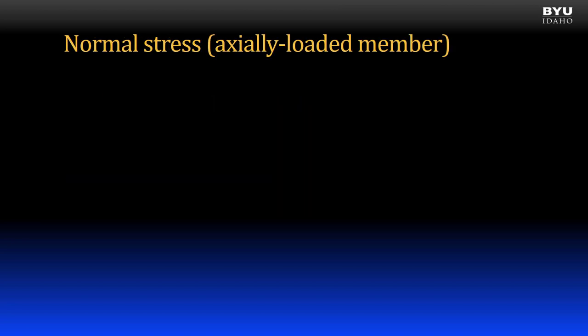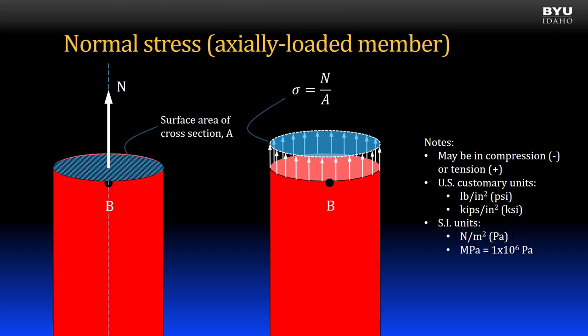First, normal stress. As we will learn in this class, normal stress can be formed in various ways. So far, we have only considered the normal stress that occurs in an axially loaded member — a member that's loaded along its longitudinal axis. Normal stress in an axially loaded member is caused by the internal normal force, shown here with the letter N.